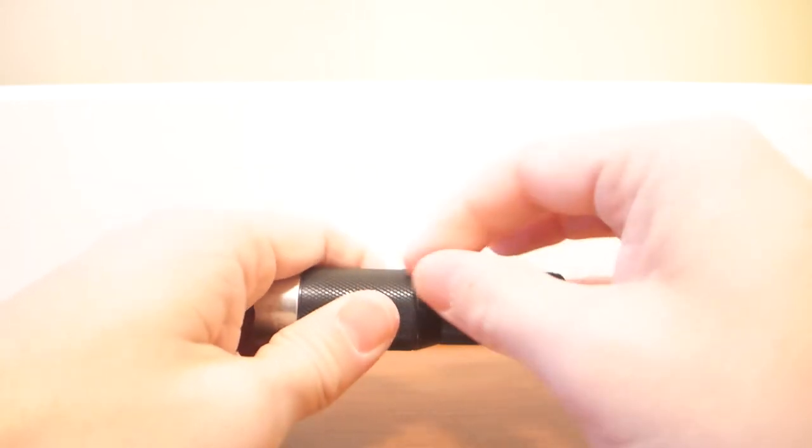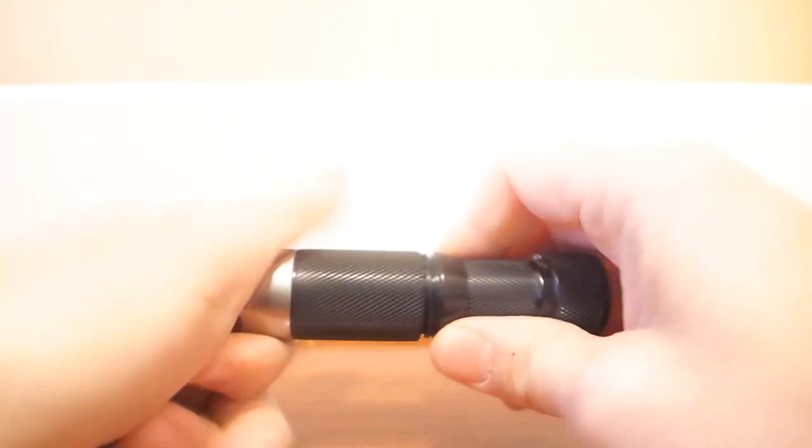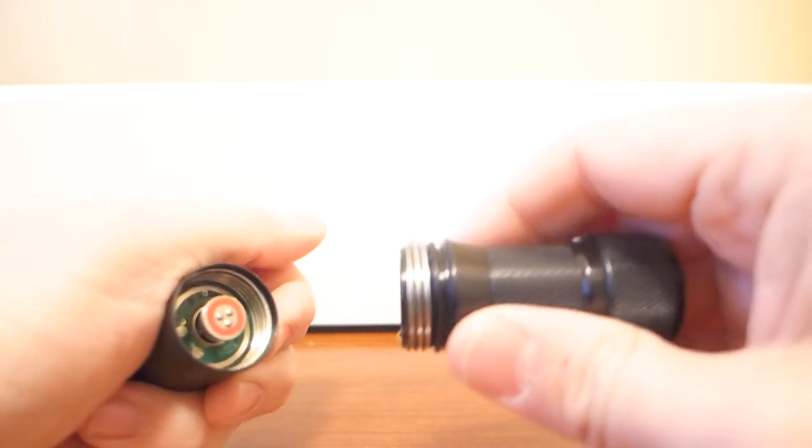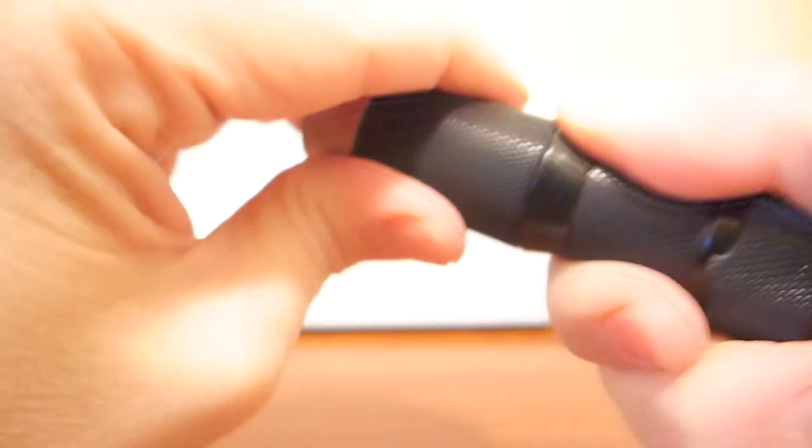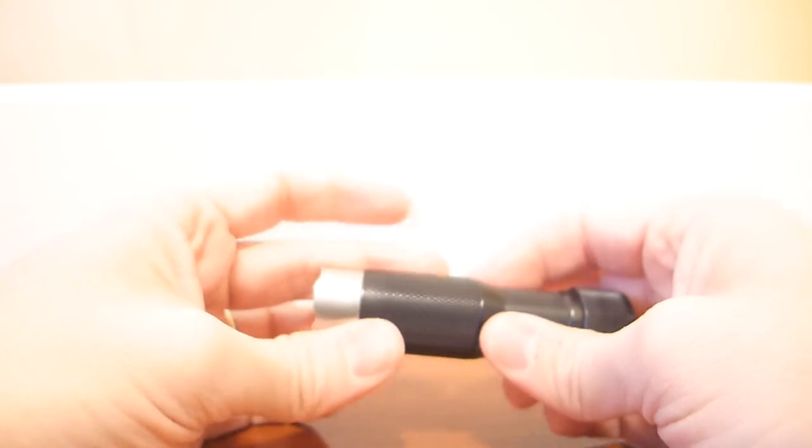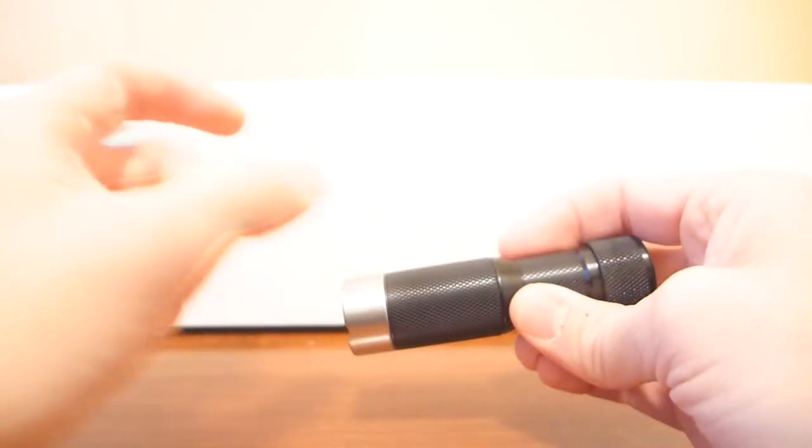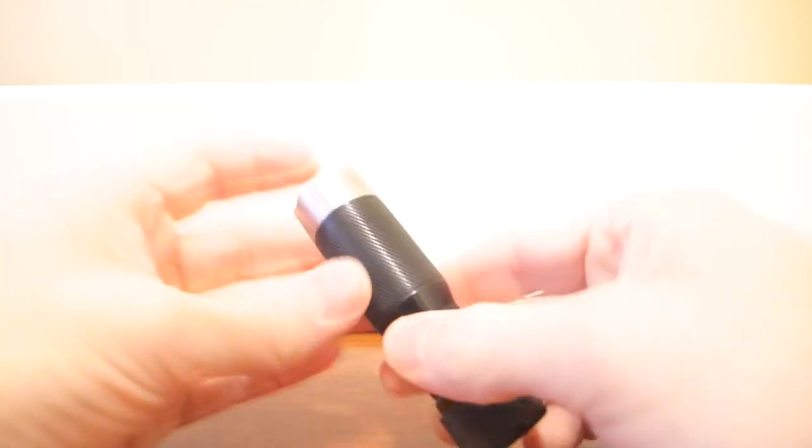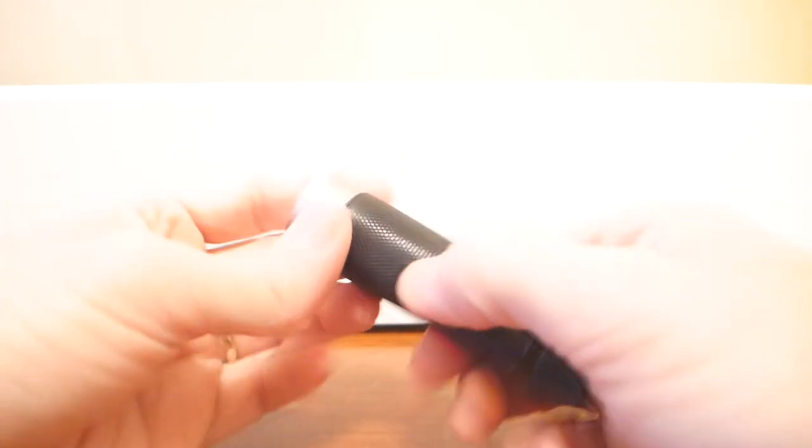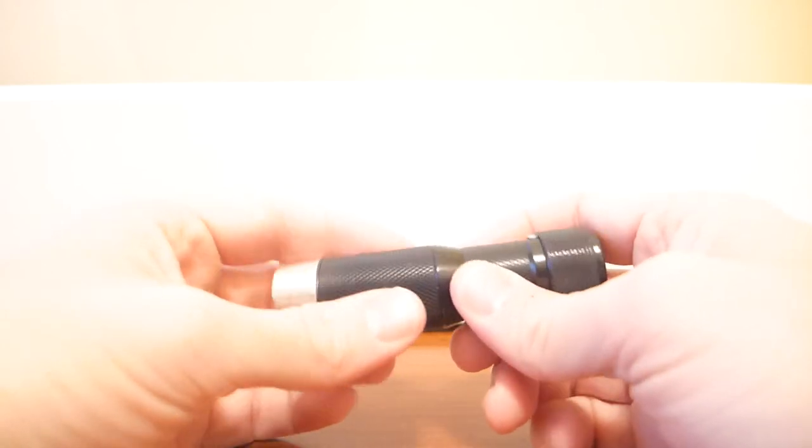If I were to undo the threads here, you would see that the light has what are called acme threads. And acme threads are notable because, unlike regular threads, they are flat at the top instead of pointy. So instead of looking like a triangle, the threads look like a trapezoid. And that is because doing that makes the threads a little bit more robust, and it makes it more difficult to cross-thread the light. There's a lot of tension on the spring, as you can see, but even then, it wouldn't cross-thread because the threads themselves are so thick and robust. And that's a theme throughout this entire light.